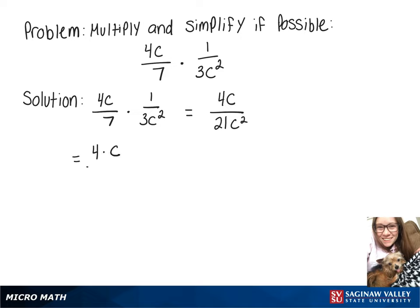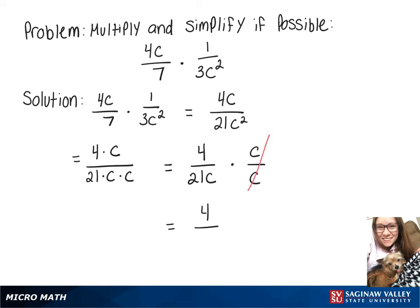Now I'm going to break some of that up, so on top I'll write 4 times c, and on the bottom 21 times c times c. This lets us write 4 over 21c times c over c. Since c over c is just 1, that goes away, leaving us with 4 over 21c.